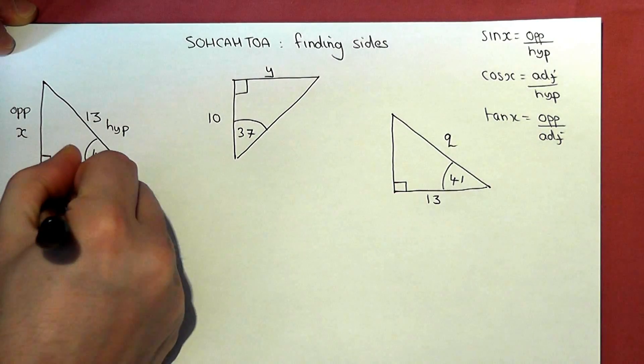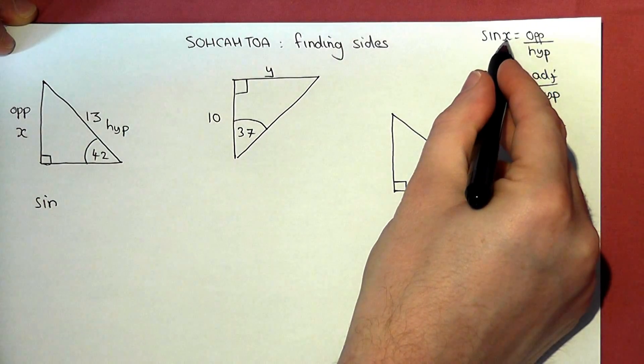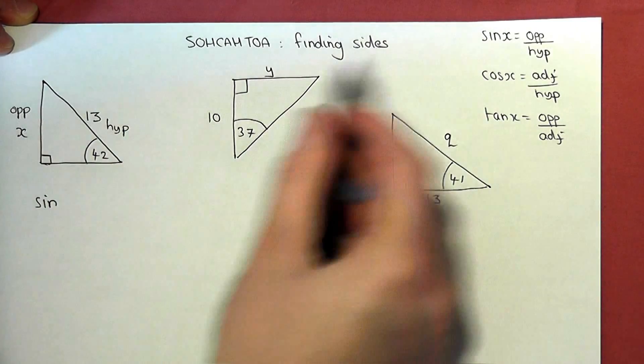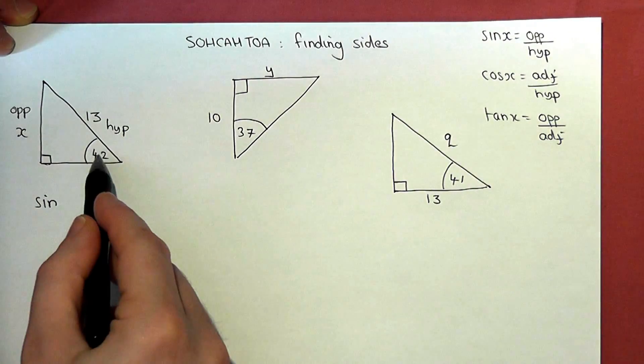So sine—now the x here in the equation is the angle, not the x in the question. So sine of the angle, in this case 42,